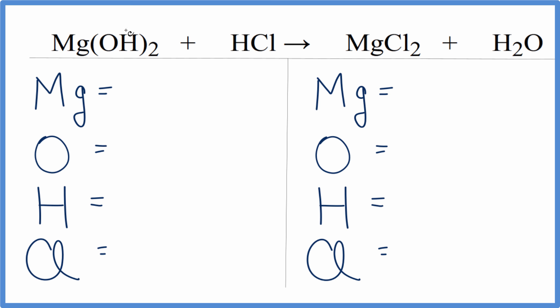In this equation, we have magnesium hydroxide plus HCl. That's a base and an acid, and they're going to neutralize each other to give us a salt, magnesium chloride, plus water.